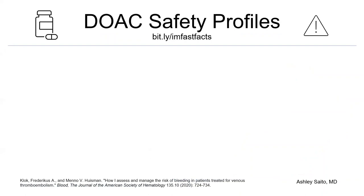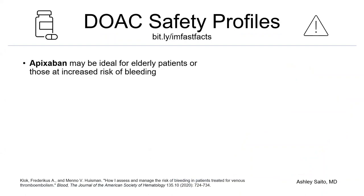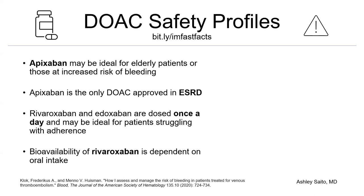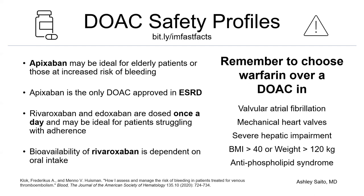To recap: apixaban has lower rates of major bleeding, intracranial bleeding, and GI bleeding, and may therefore be the most ideal anticoagulant in elderly patients or those at increased risk of bleeding. Apixaban is the only DOAC approved in end-stage renal disease. Rivaroxaban and edoxaban are dosed once a day, which may be ideal for patients struggling with adherence. If you choose rivaroxaban, remember its bioavailability is dependent on your patient's oral intake. Also remember there are clinical situations where we should choose warfarin over a DOAC, including valvular afib, mechanical heart valves, Child-Pugh C cirrhosis, morbid obesity, and antiphospholipid syndrome.